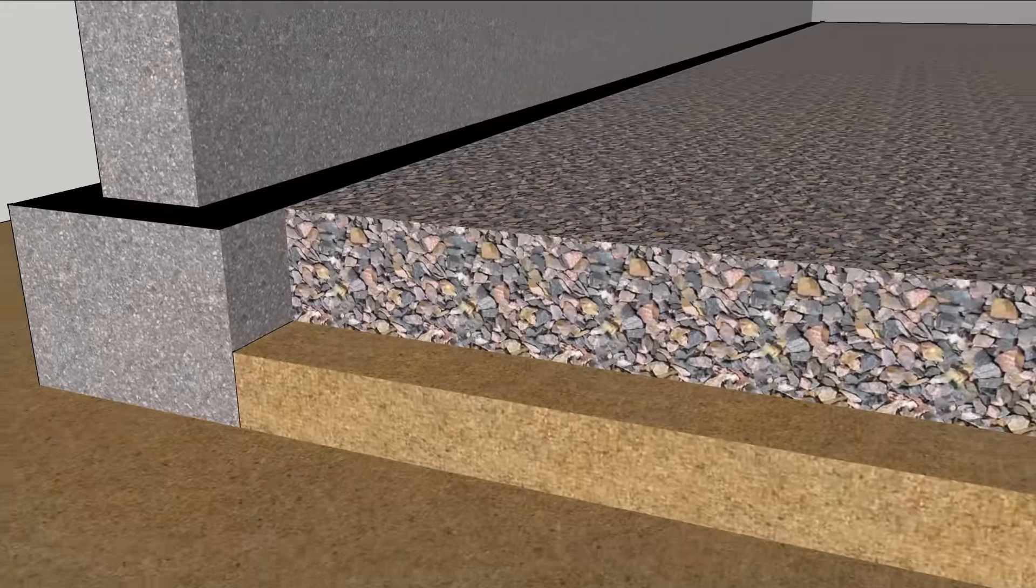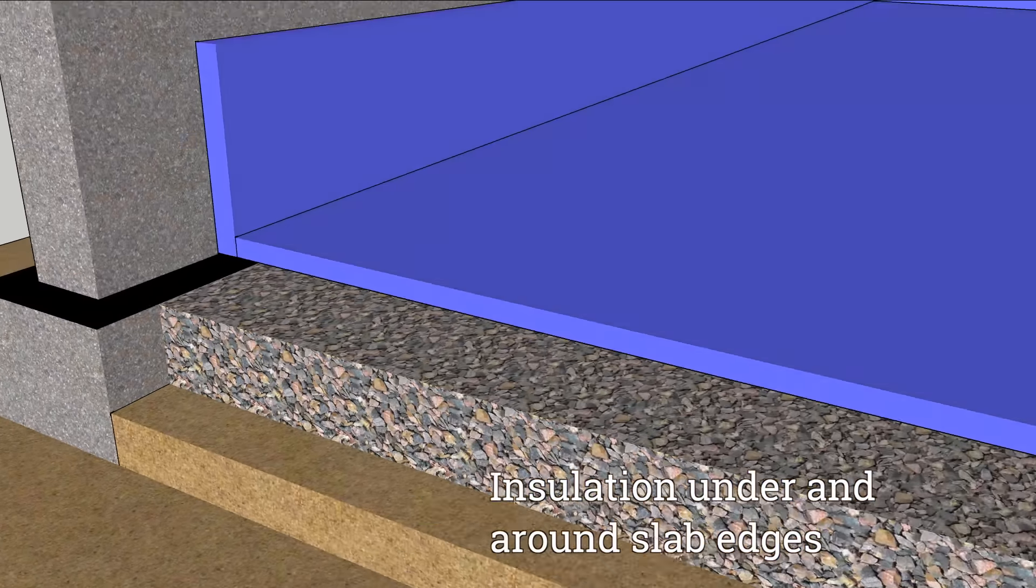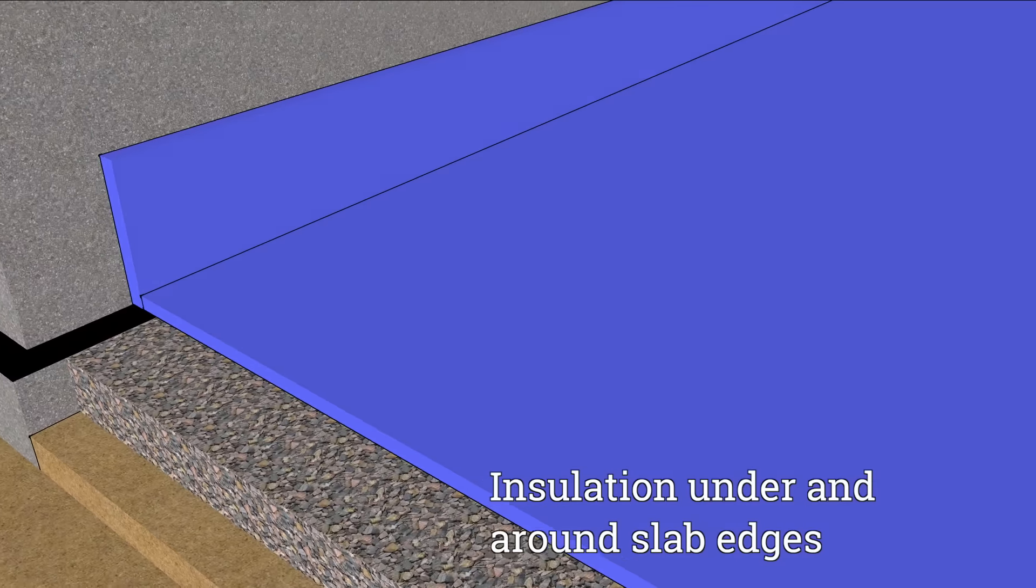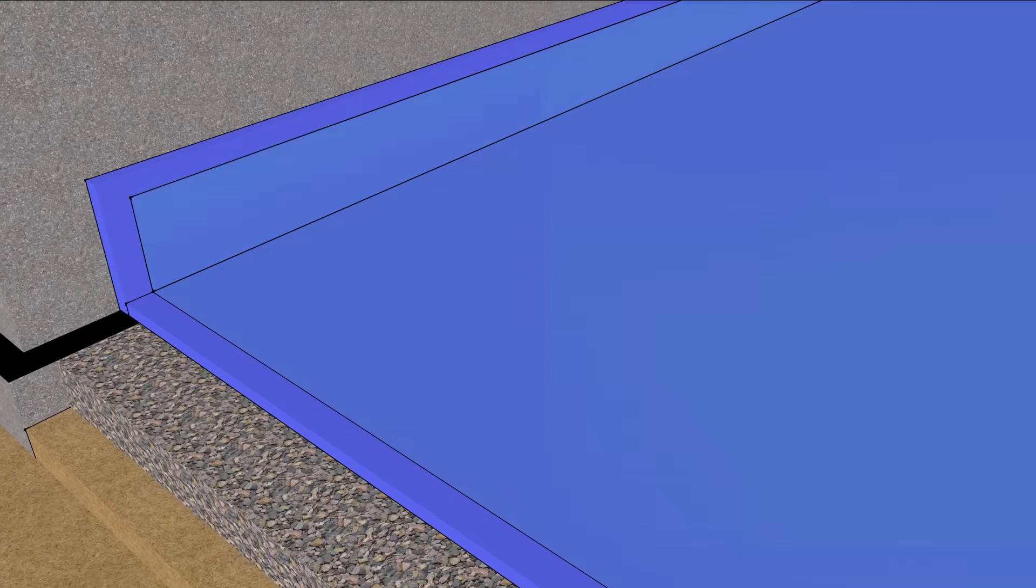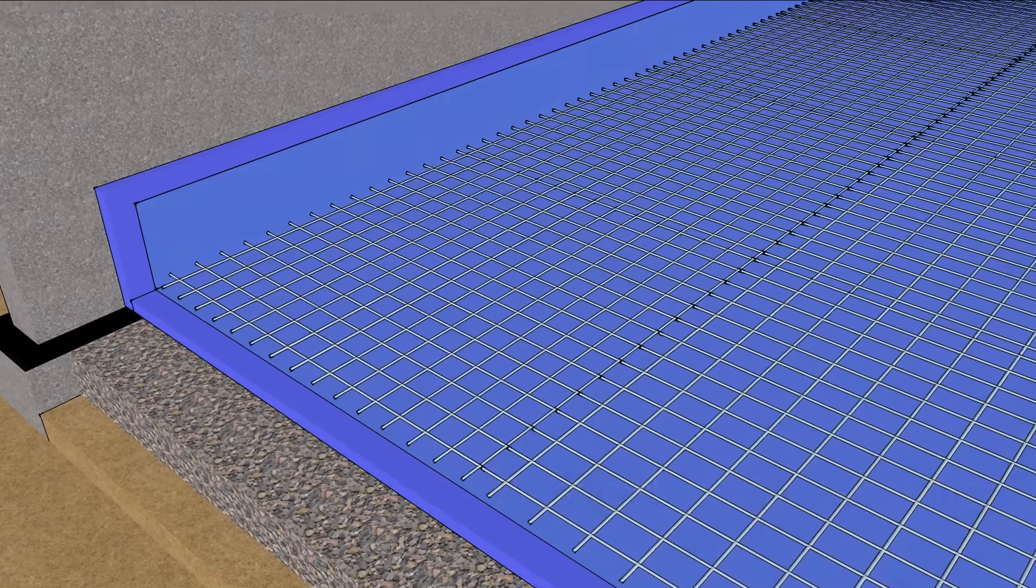Install a layer of insulation suitable for underground use and wrap it up the walls at least as high as the slab thickness. A layer of plastic slows the curing process, making the slab less prone to cracking, and wire mesh strengthens the slab even more.